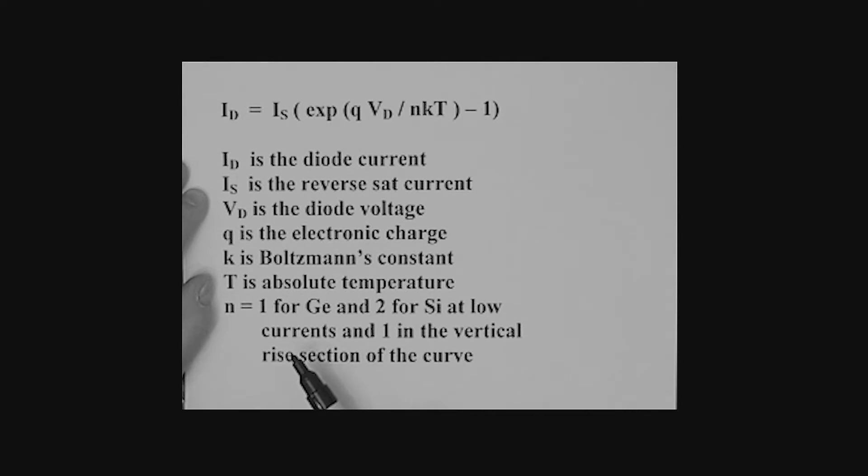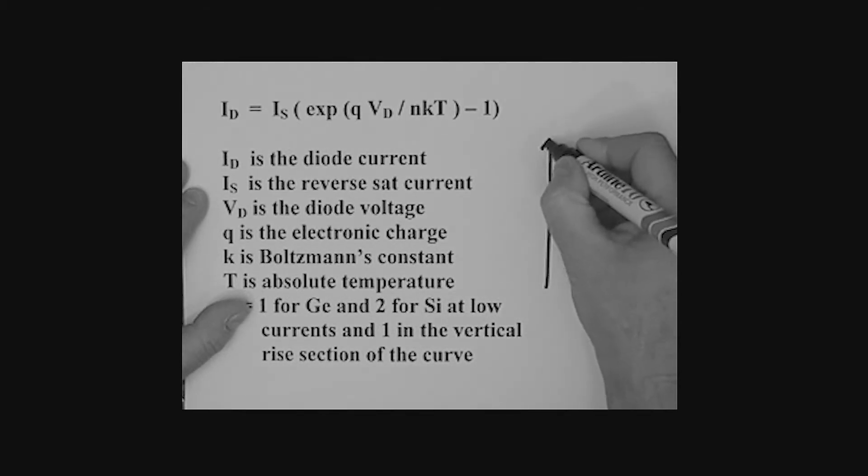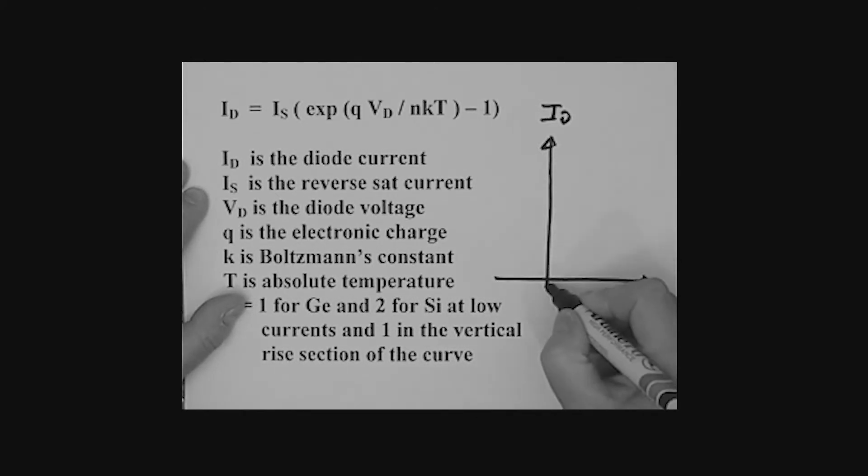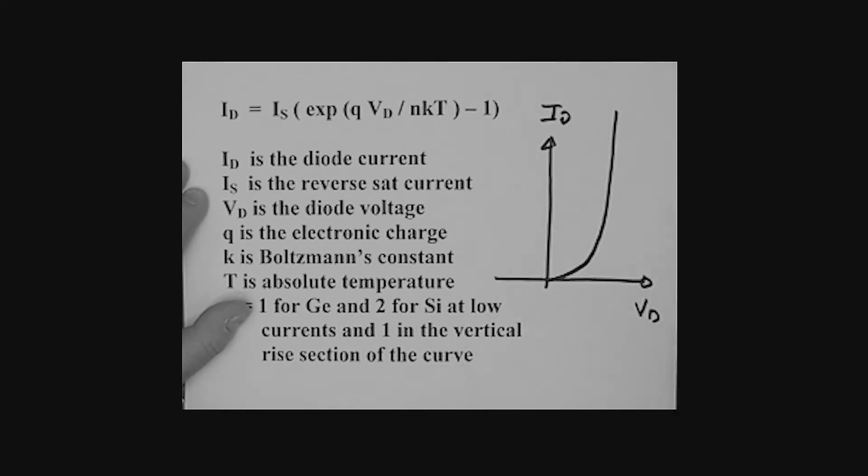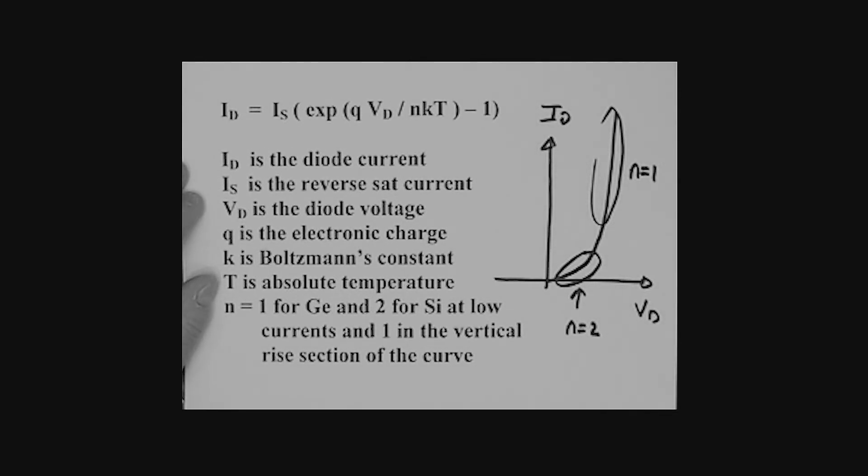This N term here is kind of like a fudge factor. If N is equal to one, that's true for a germanium diode. In the case of a silicon diode, N is actually equal to two for low currents and then becomes one for higher currents. If I drew the characteristic curve again, here is ID and here is the voltage VD. We have this curve. What we're saying for silicon is down here at low currents, N is equal to two. But up here in the vertical rise section for silicon, N is equal to one.